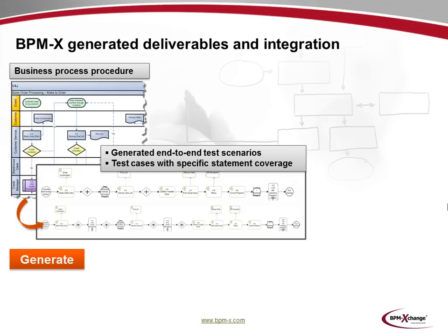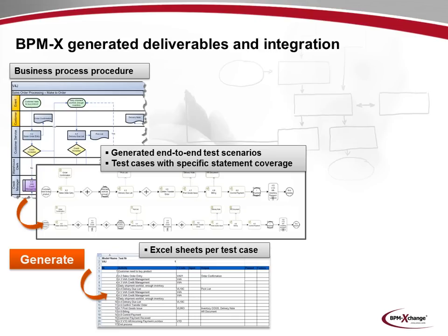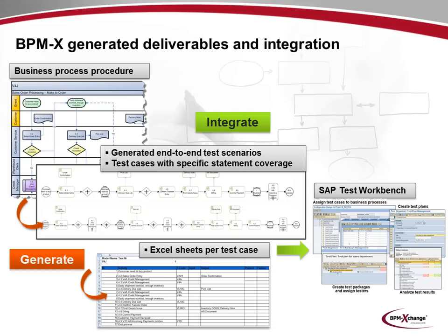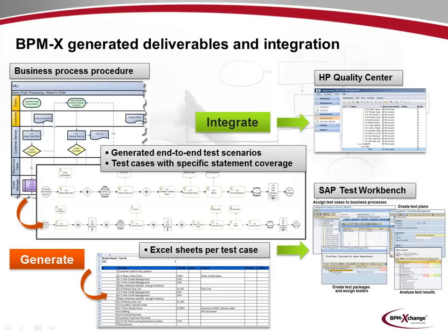To control the number of generated test cases, an ERP test manager typically selects one of the following coverage options. The statement coverage ensures that each activity and decision is at least executed once. The branch coverage makes sure that each branch of the control flow of the process is embraced. And the path coverage cares about testing each possible outcome of an atomic decision in a test case of its own. A very common format used for testing is Microsoft Excel. The BPMX test case generator permits to create one Excel file containing all test cases. The Excel output option is also very handy for integration with the SAP Solution Manager's test workbench, as Excel files may easily be loaded into Solution Manager. As a vendor-neutral supplier, BPMX directly supports HP Quality Center by exchanging test cases as BPMN models in the XPDL interchange format.